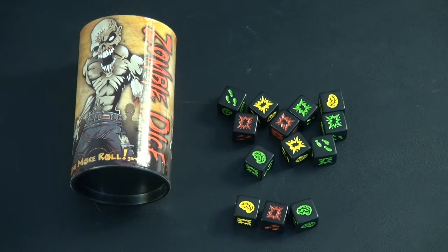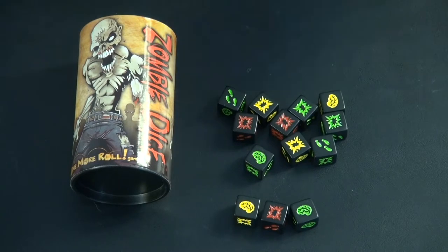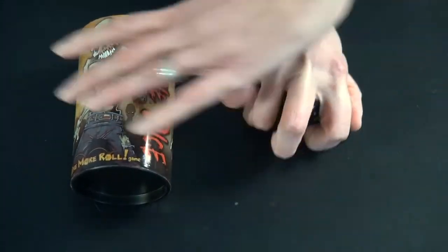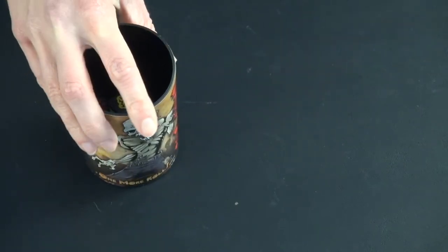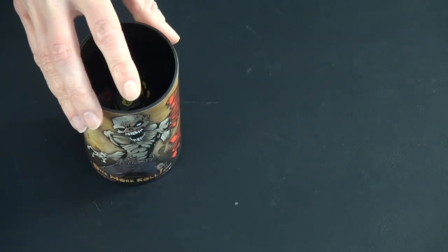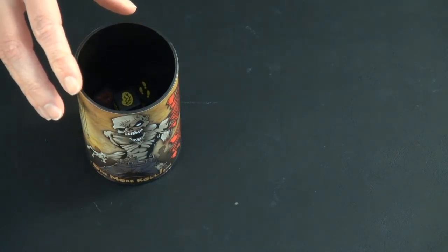The goal of the game is to be the first player to collect 13 brains. To begin, you take all the dice, put them in the container, give it a shake, and then the person who won the last game or the one who can say brains with the most feeling gets to go first.